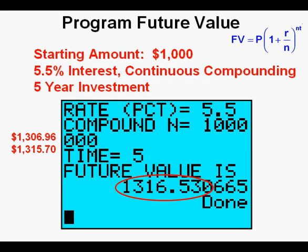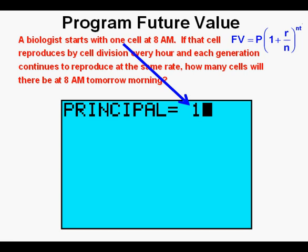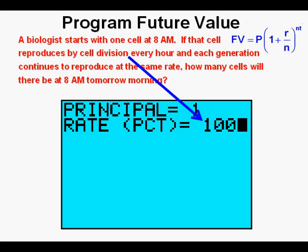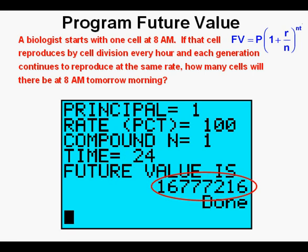Let's consider another type of application of this formula. A biologist starts with one cell at 8 a.m. If that cell reproduces by cell division every hour and each generation continues to reproduce at the same rate, how many cells will there be at 8 a.m. tomorrow morning? That single cell will be a principal or starting amount of 1. A cell reproduction by division would be a 100% rate of growth. N for compounding would be 1 for once every hour. And since we need to find the number of cells 24 hours later, we set time to 24. We press enter and get 16,777,216 cells.